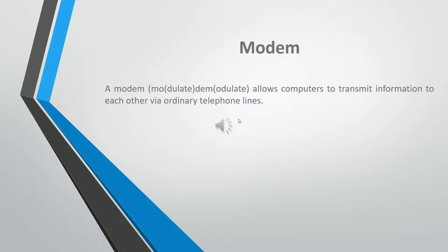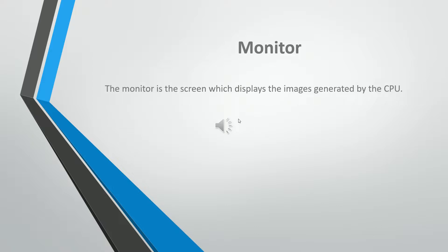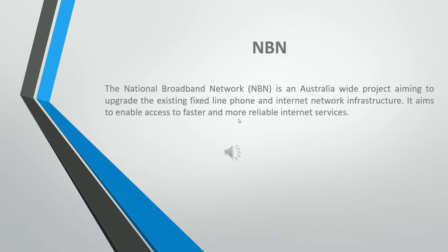The modem (modulator-demodulator) allows computers to transmit information to each other via ordinary telephone lines. The monitor is the screen which displays the images generated by the CPU. The National Broadband Network (NBN) is an Australia-wide project aiming to upgrade the existing fixed-line phone and internet network infrastructure. It aims to enable access to faster and more reliable internet services.